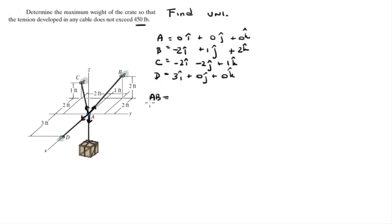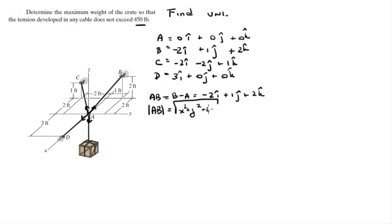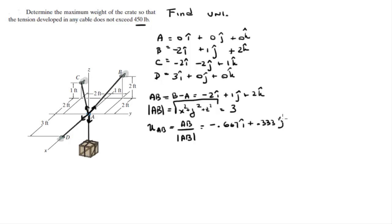To find unit vector AB, first find the vector from A to B. Since A is the origin, vector AB is simply -2i + 1j + 2k. Then find the magnitude: sqrt((-2)² + 1² + 2²) = sqrt(9) = 3. The unit vector AB is found by dividing the vector by its magnitude, giving -0.667i + 0.333j + 0.667k.